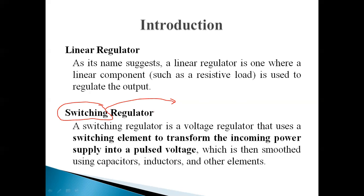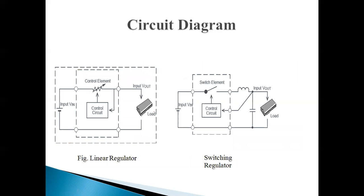We know that the load requires smooth DC voltage. So we again use some capacitor, inductor, and other elements for smoothing those particular pulses. We can see that there is a figure of linear regulator and switching regulator, and we will see the difference between the linear regulator and switching voltage regulator by using these two circuits.